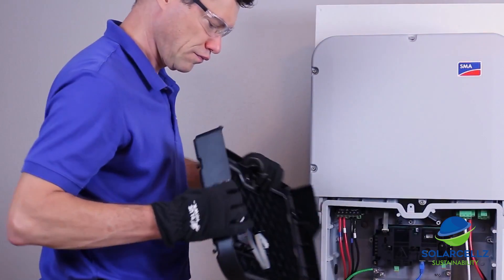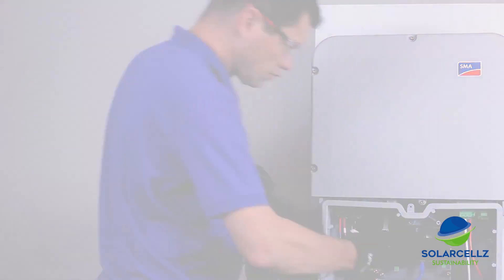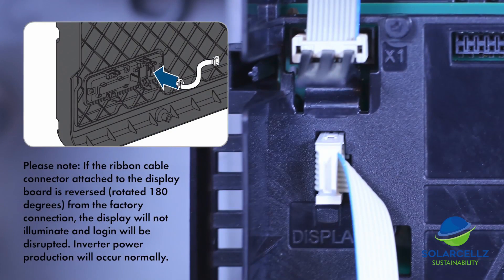When you are finished with wiring, remember to attach the display board ribbon cable to the communications board before reattaching the connection unit lid.